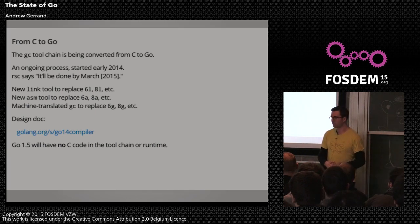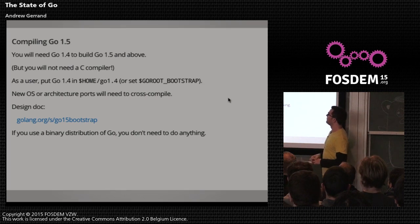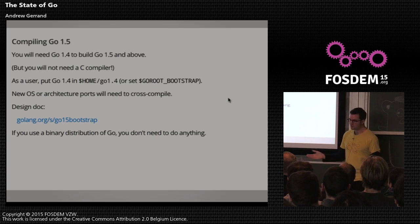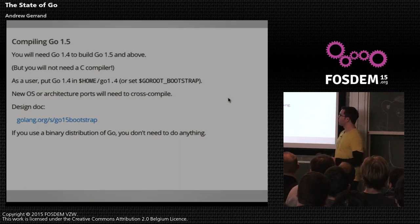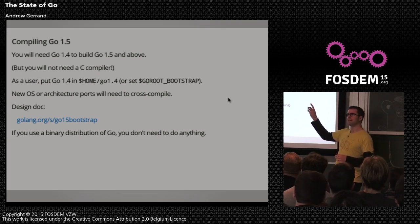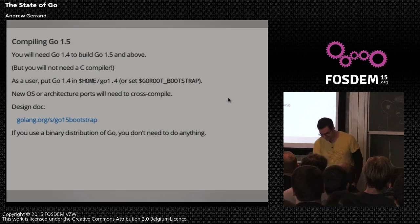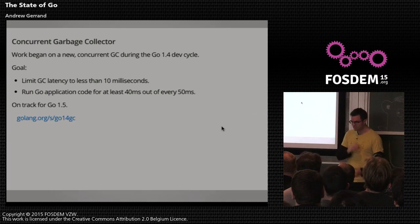The upshot is that in 1.5 there will be no C code anywhere in the toolchain or runtime — all the runtime code was converted by hand by the team. To compile Go 1.5 and later you won't need a C compiler, but you will need a Go compiler. The way to do that is to put a directory in your home directory called go1.4 with Go 1.4 in there, or set the GOROOT_BOOTSTRAP environment variable. One downside: for new operating systems and architectures you'll need to cross-compile. But if you use the binary distribution from golang.org/dl, you don't need to do anything.